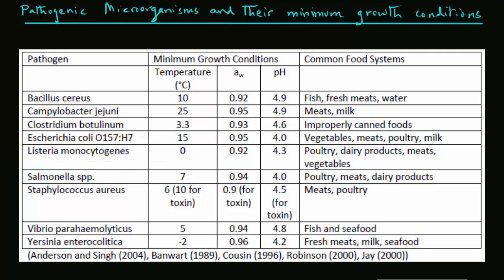And, on the other hand, Campylobacter jejuni grows around room temperature or 25 degrees Celsius. Similarly, the minimum growth conditions in terms of water activity vary, but most of them require fairly high water activity, as seen in this table.